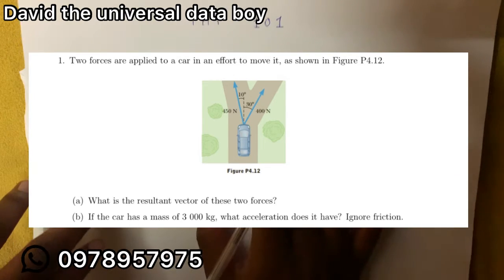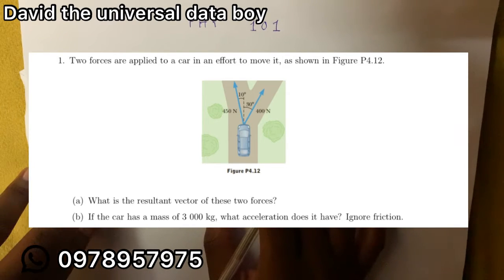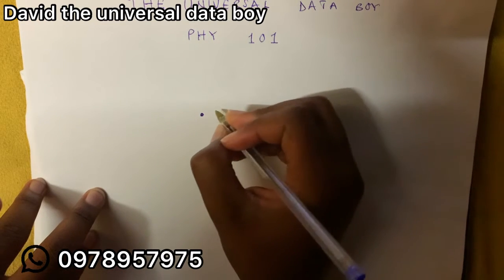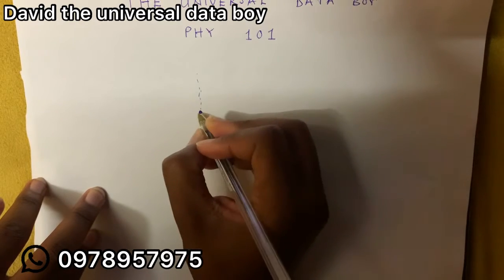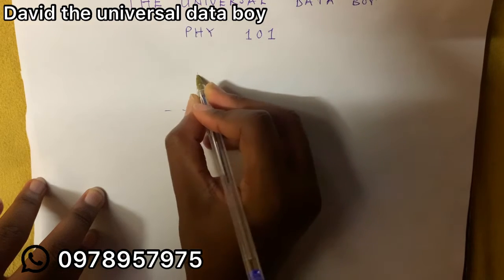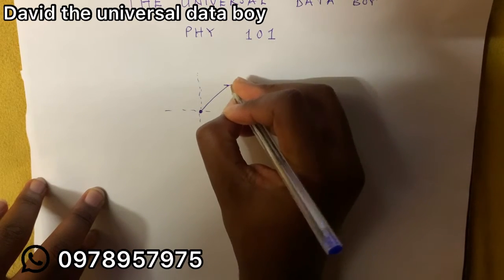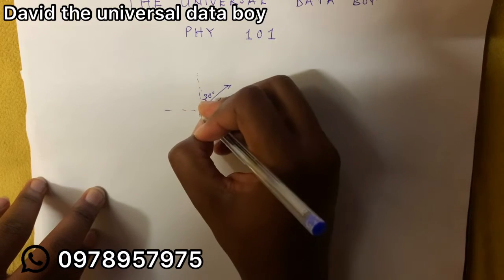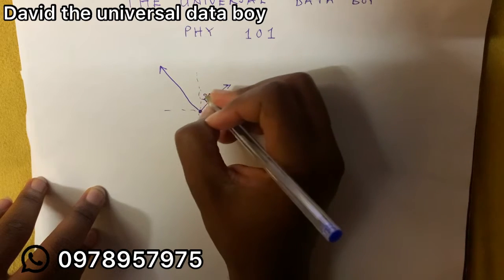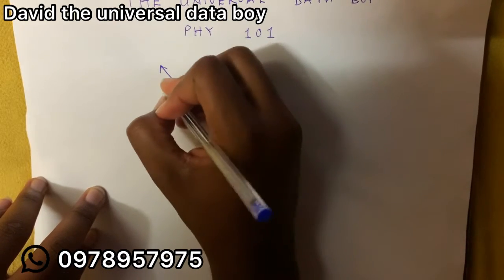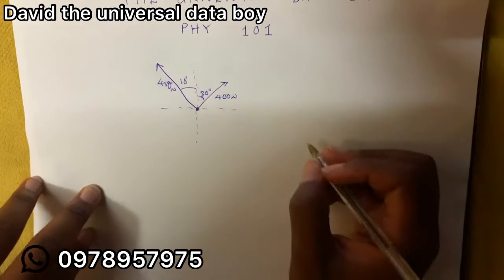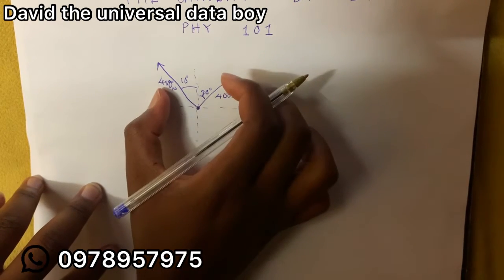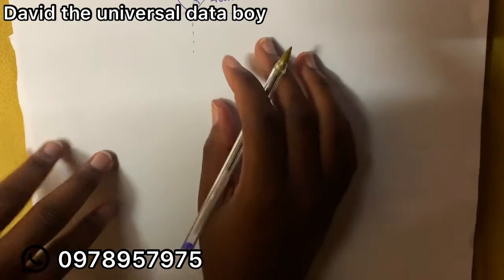Ignore friction. For the first part, we can draw a free body diagram showing the forces. I've got the car — we're going to assume it's a particle — and those are our two axes: this is the y-axis and this is the x-axis. We have one force going at 30 degrees with a magnitude of 400 Newtons, and another at 10 degrees with a magnitude of 450 Newtons. We resolve the x and y components, find the resultant in x and y, and go from there.